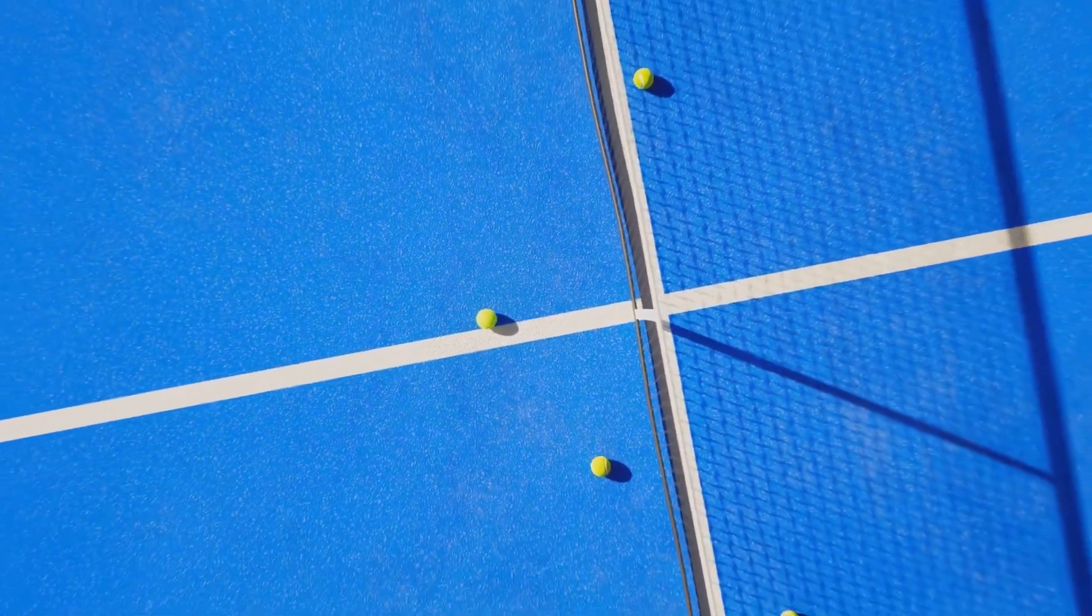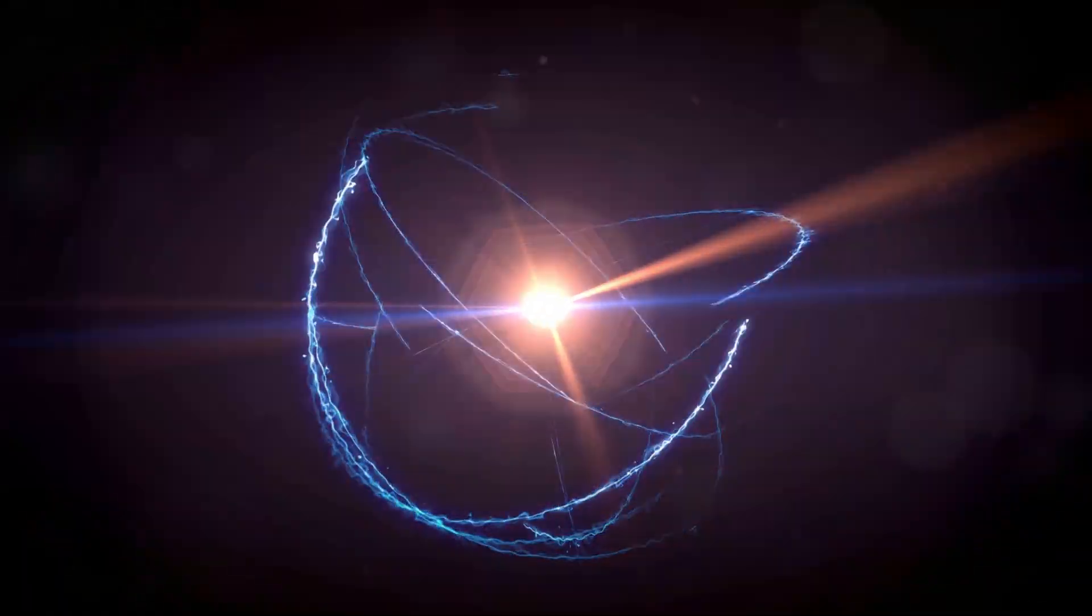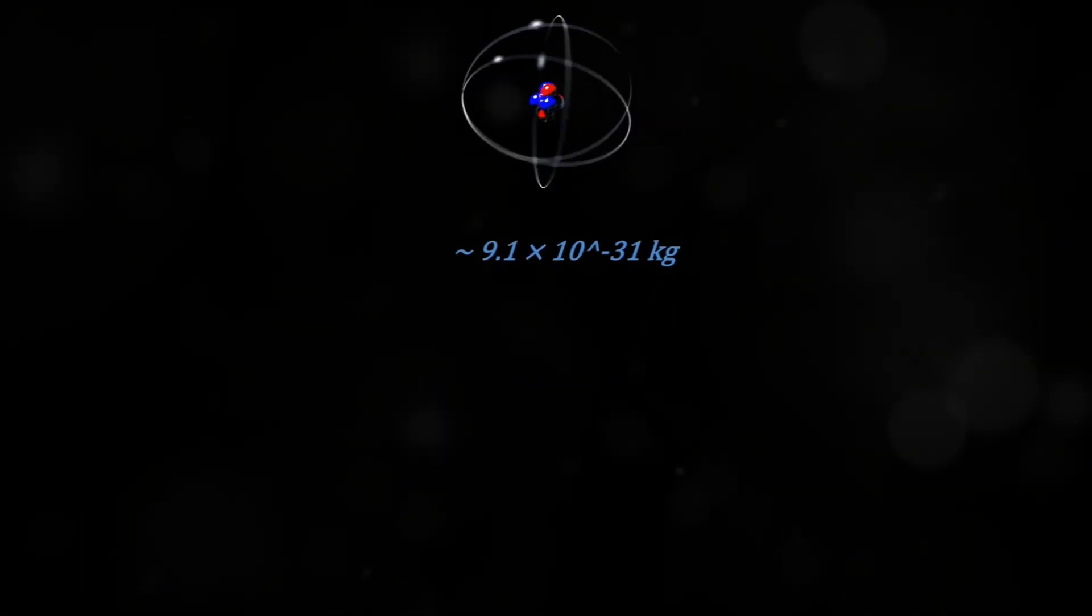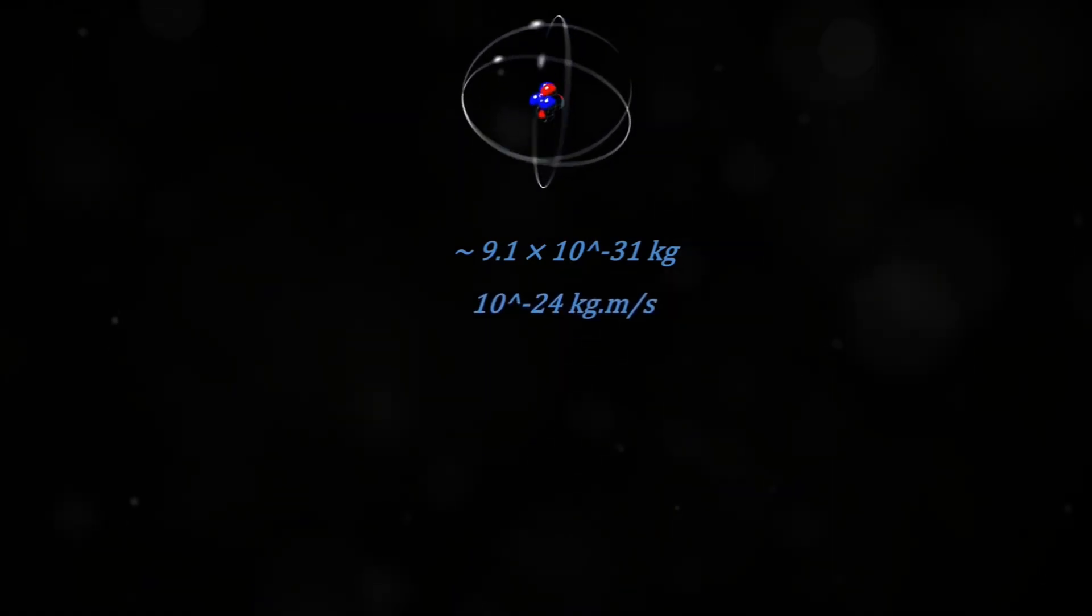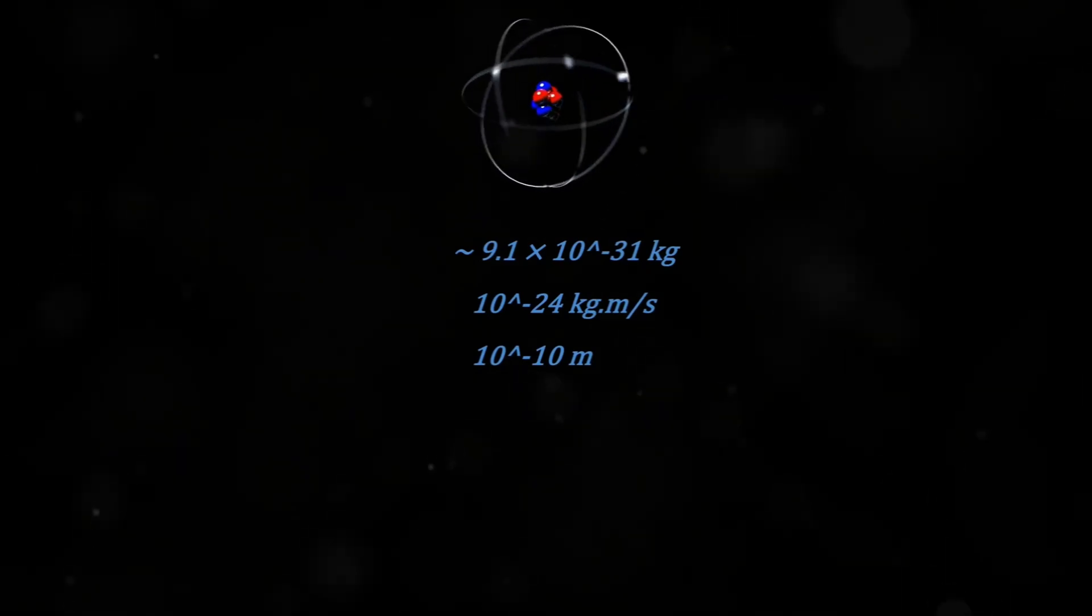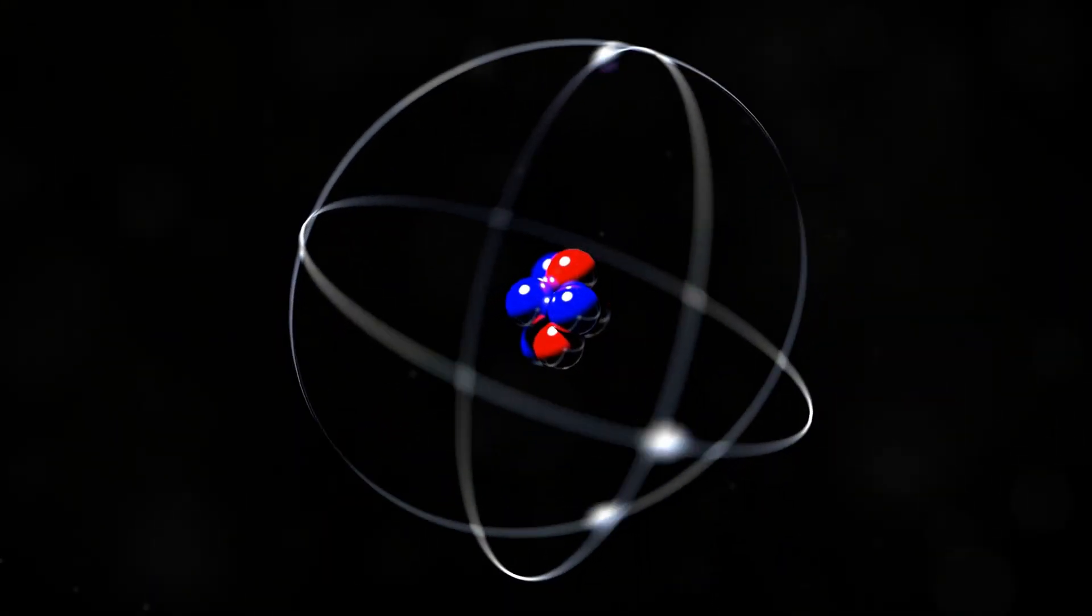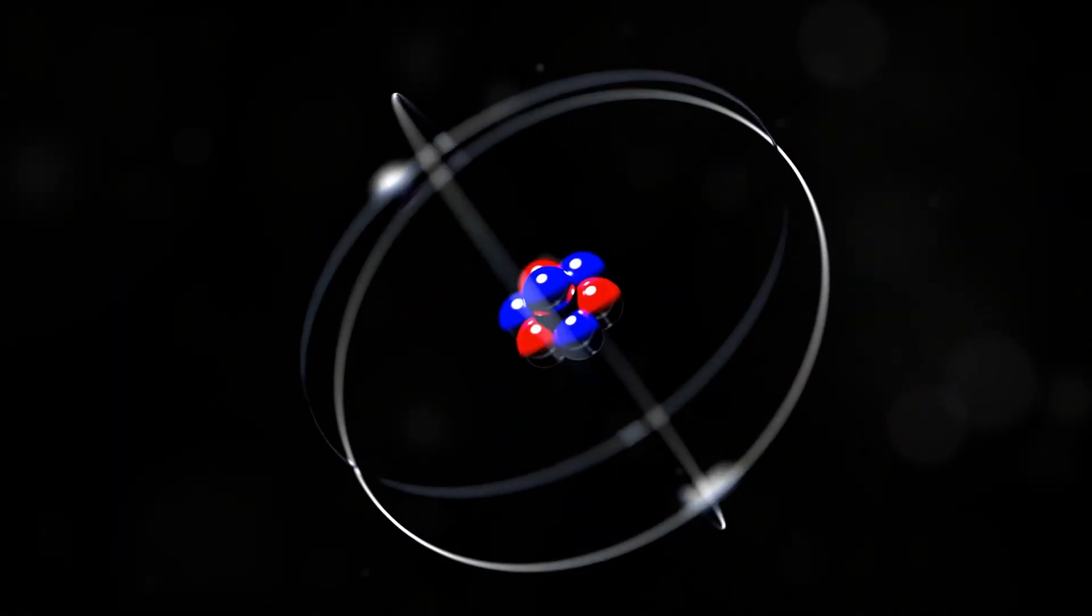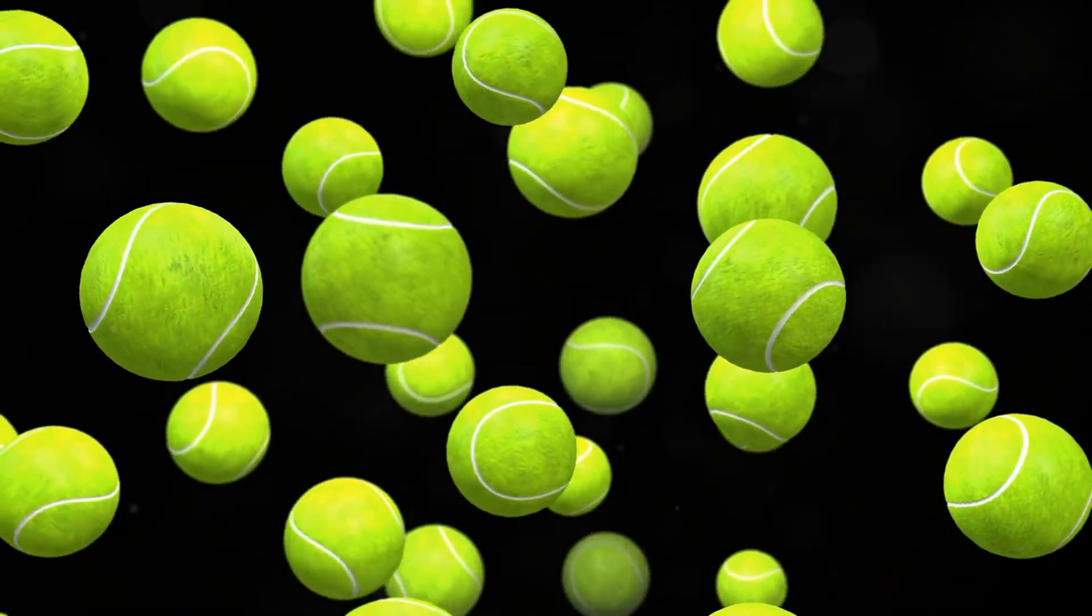In essence, a tennis ball behaves entirely like a normal particle. But for tiny particles like electrons, the story is different. An electron has a mass of about 9.11 times 10 to the power of negative 31 kilograms and a typical momentum that might be around 10 to the power of negative 24 kilogram meter per second. Using de Broglie's equation, the wavelength of this electron turns out to be around 10 to the power of negative 10 meters, or 0.1 nanometers, which is about the size of an atom. This wavelength is large enough that it can be measured in experiments, and the electron's wave-like behavior becomes very significant in quantum mechanics. So it's not that large objects don't have wave behavior, it's just that their wavelengths are so incredibly small that we can't observe them in our everyday life.